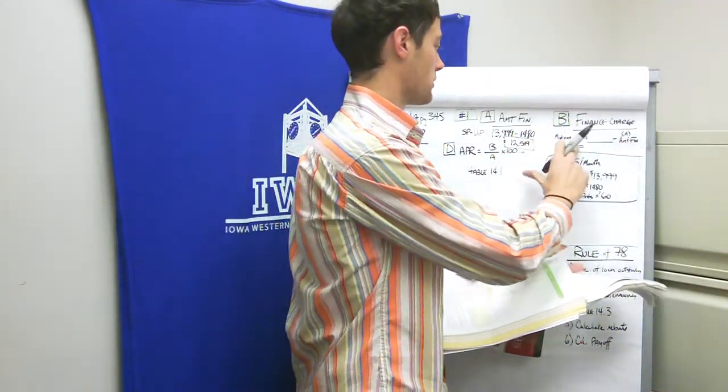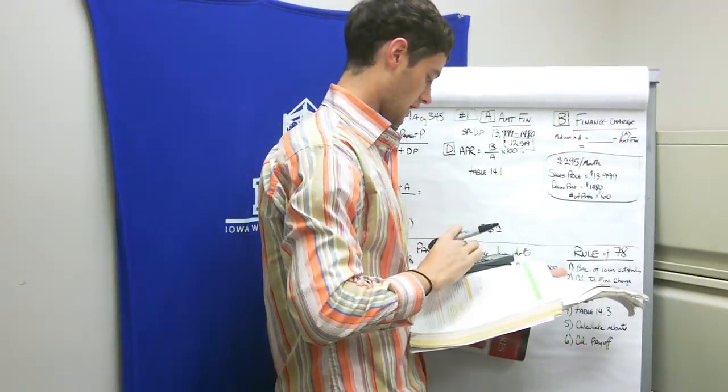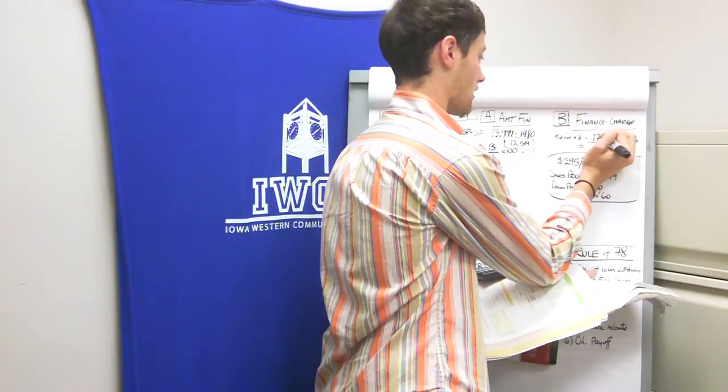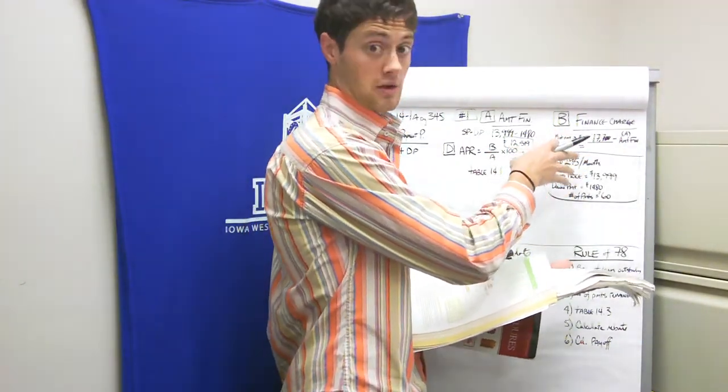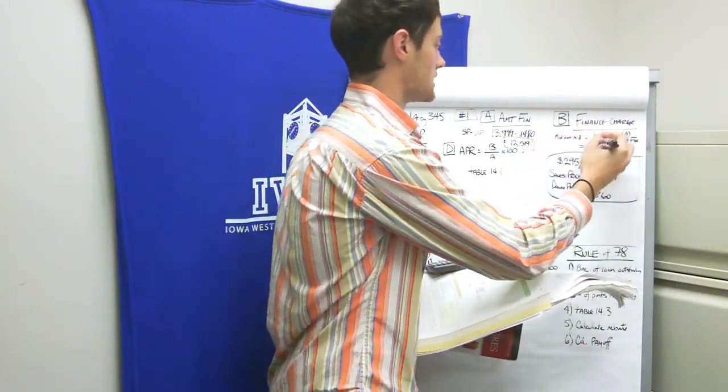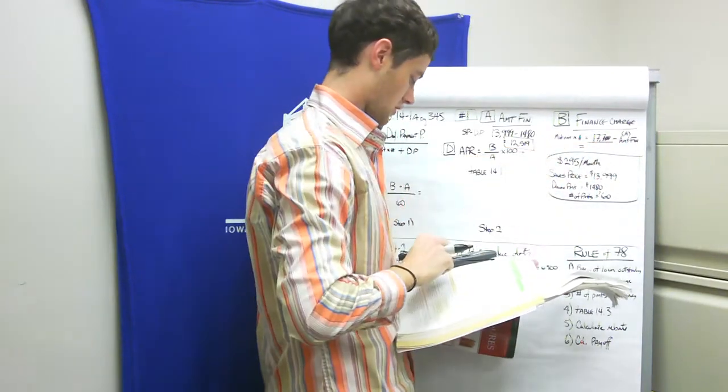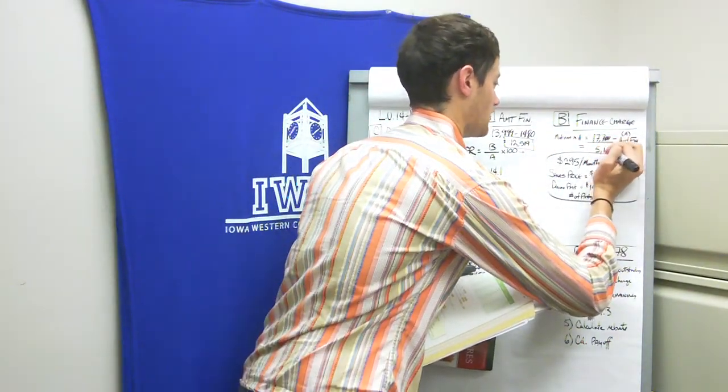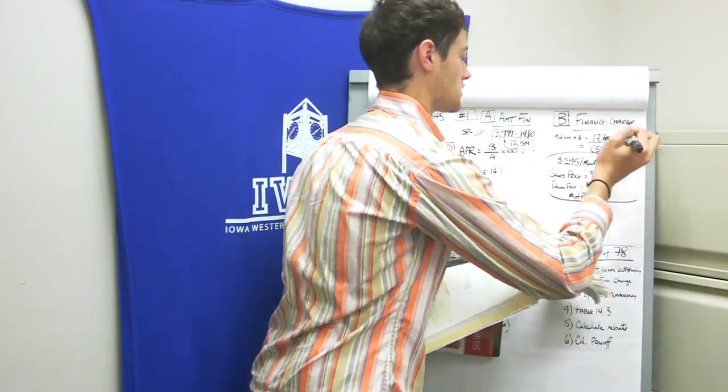Our finance charge is our monthly payment of $295 times our number of payments, which is 60. That's $17,700. It's going to cost us $17,700 after we've paid our down payment. To figure out how much is the finance charge or interest, $17,700 minus $12,519 equals $5,181 in interest. That's our finance charge.